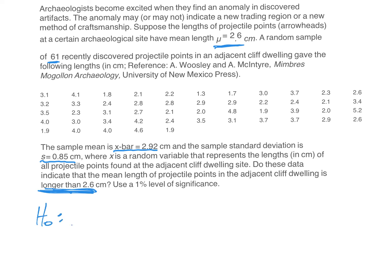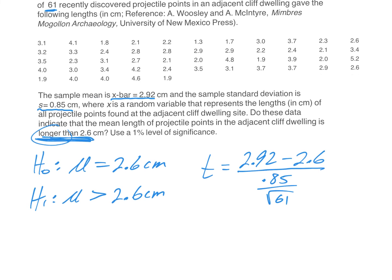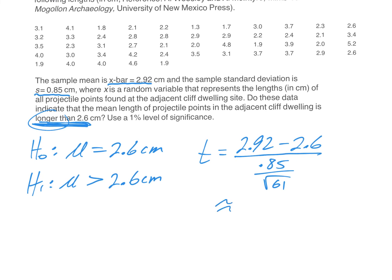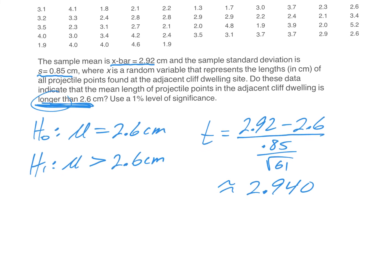So let's start by doing our hypotheses. H naught mu is equal to our 2.6 centimeters. H1 mu is greater than our 2.6 centimeters, right? Longer means greater. We're finding a T. Why? Because sigma is not given and S was. And that is our 2.92, which is our X bar, take away our mu, which is 2.6, divided by our S, which is 0.85, divided by the square root of 61. Plugging this into our calculator, we get 2.940. Remember, three decimal places because our T distribution chart goes to three decimal places. Now, we're using a 1% significance level, right? That's the 0.01.